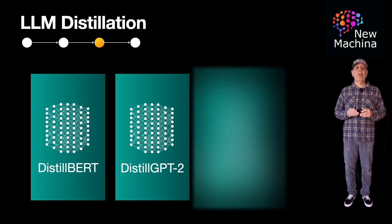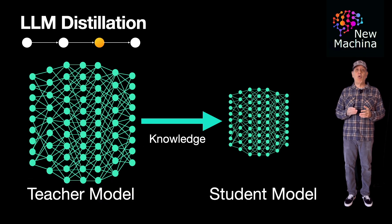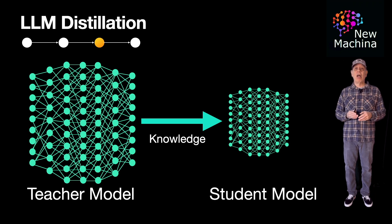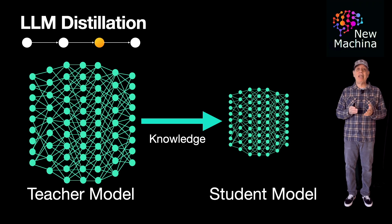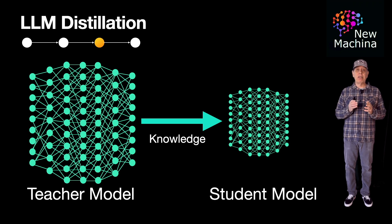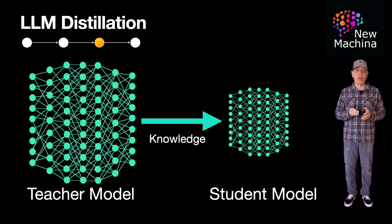In summary, LLM distillation will be popular because it significantly reduces compute costs, speeds up inference, and enables real-time AI on mobile, edge, and cloud environments, while retaining most of the accuracy of large models. As AI adoption scales, businesses and developers will prioritize efficient, affordable, and scalable models to power applications without the need for massive infrastructure.